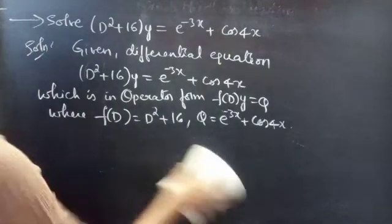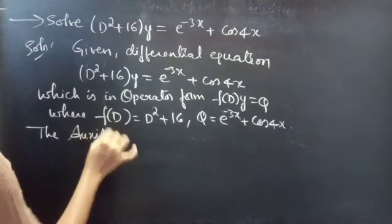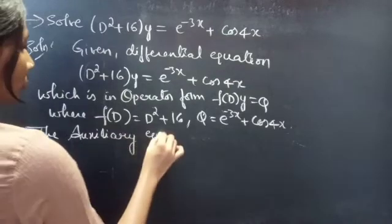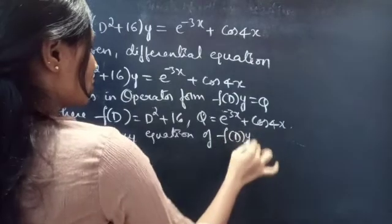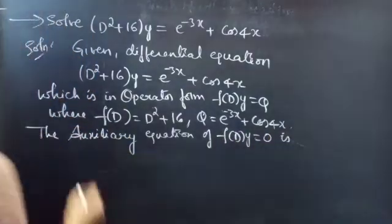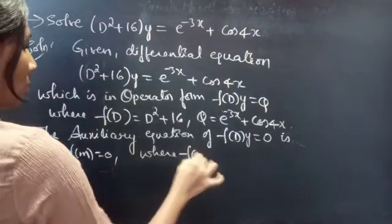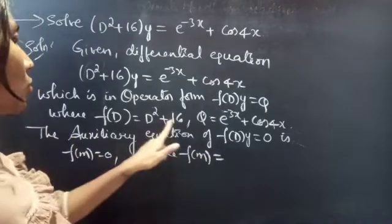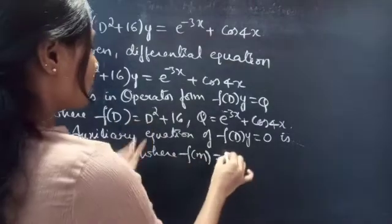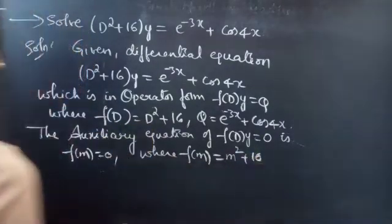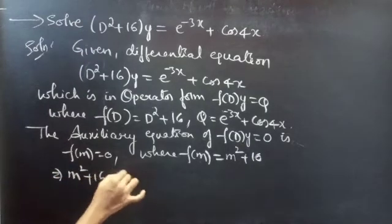Let's find the complementary function using the auxiliary equation. For f(d)·y = 0, we set f(m) = 0. Since f(d) = d² + 16, we replace d by m to get f(m) = m² + 16. So the auxiliary equation becomes m² + 16 = 0.